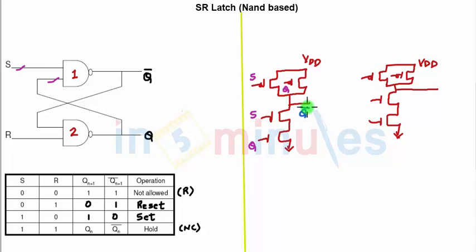For NAND2, the inputs are R and Q̄, and the output is Q.